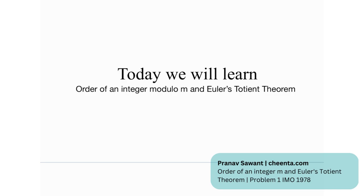Hi everyone. Today we're going to talk about two really amazing concepts in number theory: the order of an integer modulo m and the Euler–Totient theorem. These are connected in a way — we're going to see what their connection is and what exactly the order of an integer modulo m is.